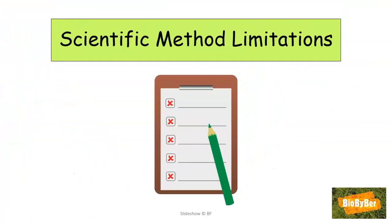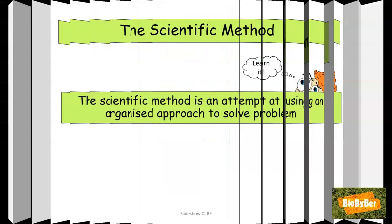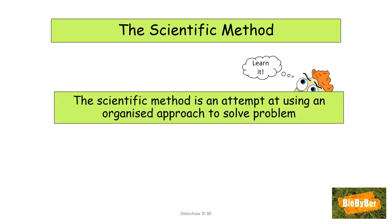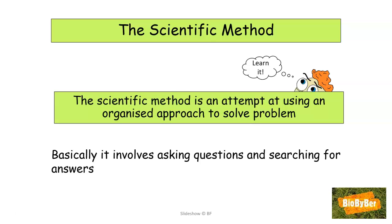Let's look at scientific method limitations. Before we look at the limitations, let's remind ourselves of the scientific method. The scientific method is an attempt at using an organised approach to solve problems — a set of guidelines that scientists follow when carrying out their work. It involves asking questions and searching for answers in a logical fashion. Scientists seek solutions to problems and use science to discover new knowledge, following a set of guidelines.